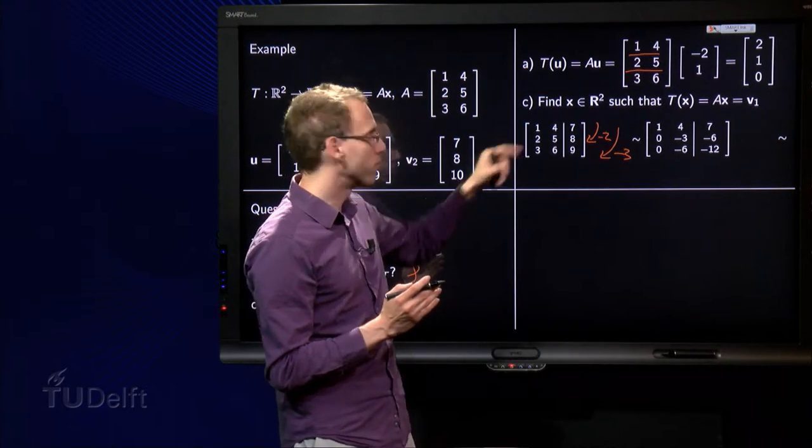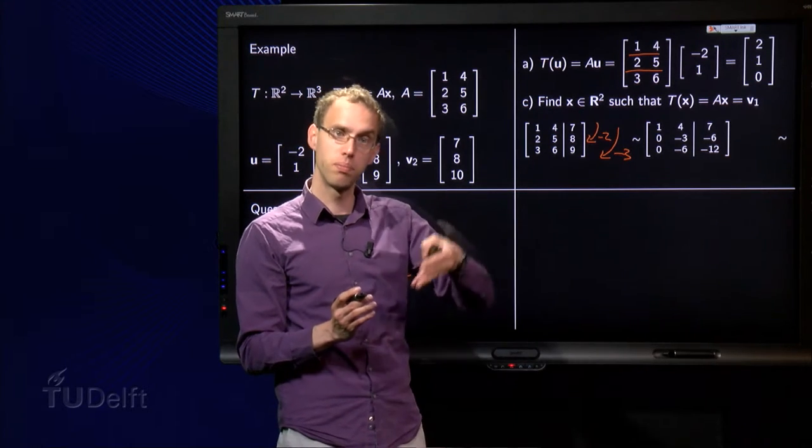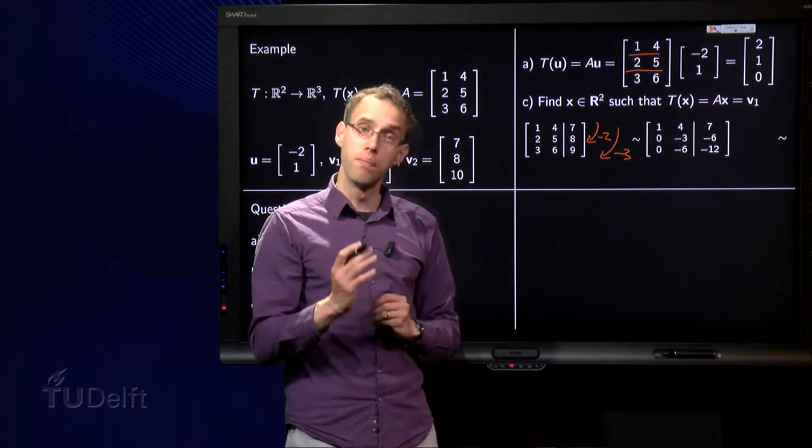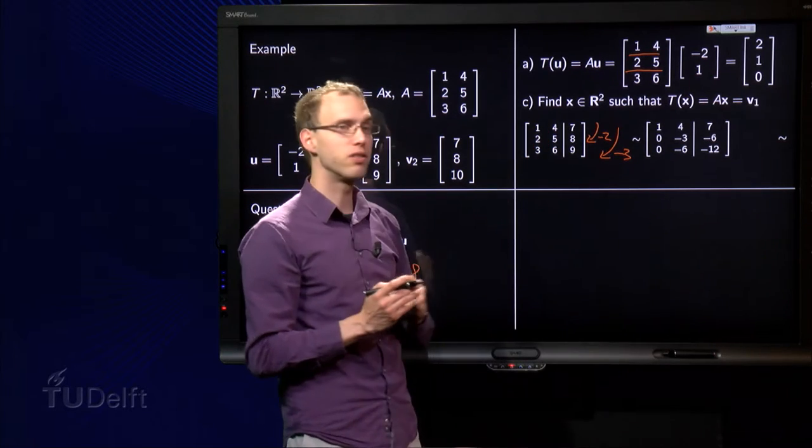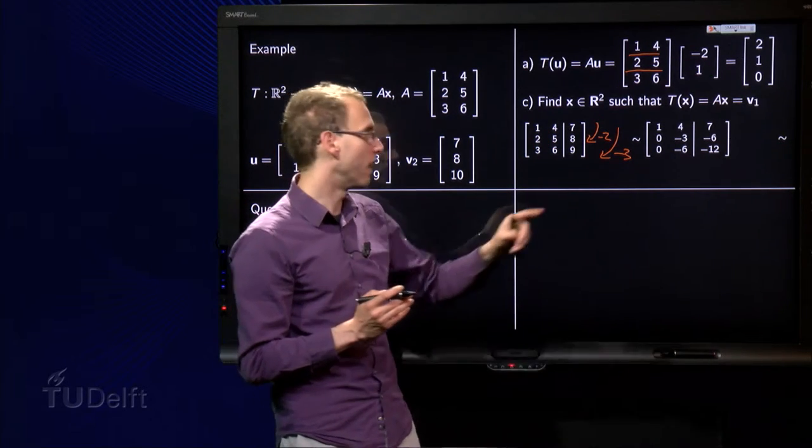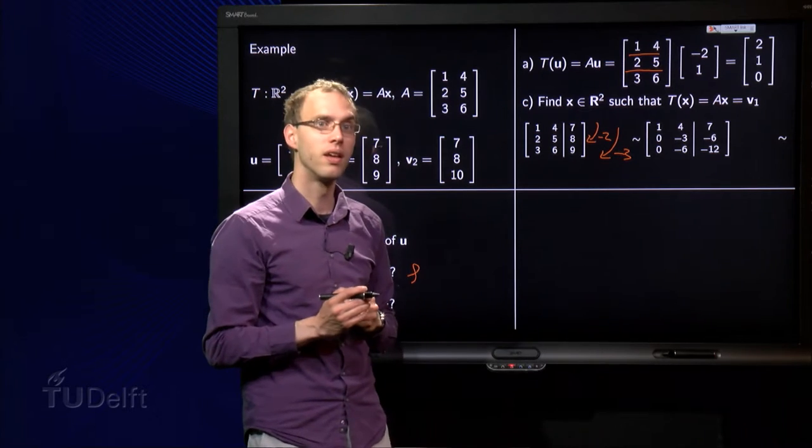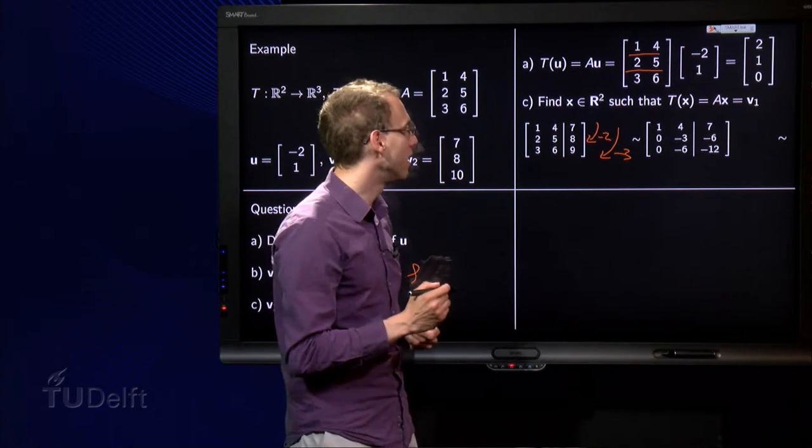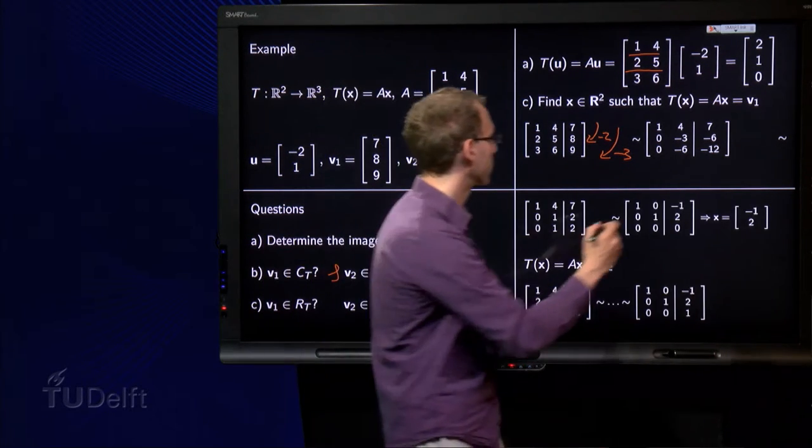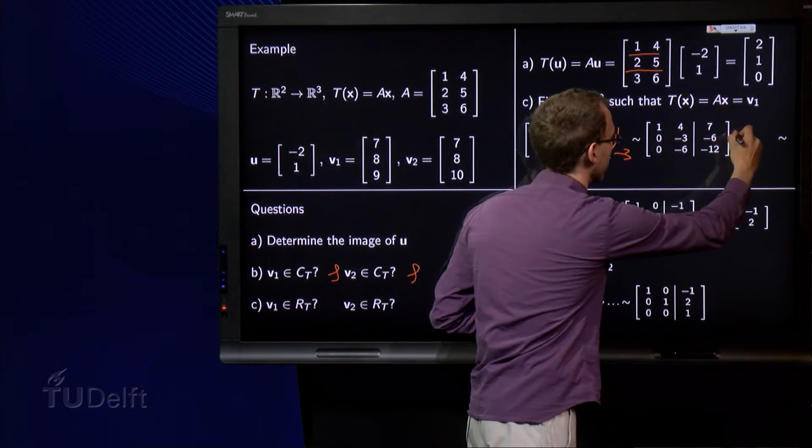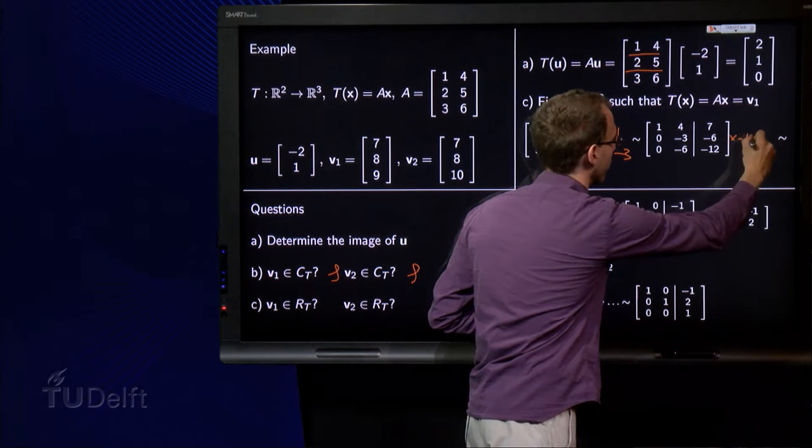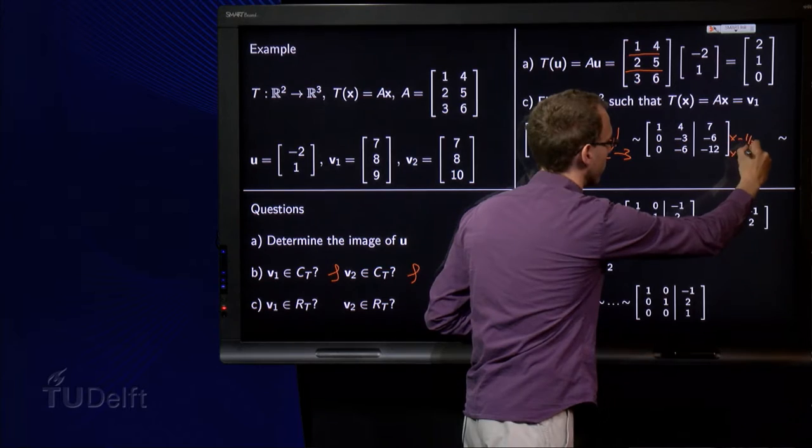Then -3 times 1 equals -3 plus 3 equals 0, -3 times 4 equals -12 plus 6 equals -6, -3 times 7 equals -21 plus 9 equals -12. Okay, that's nice, we can clean up some rubbish over there with -1/3 and -1/6.